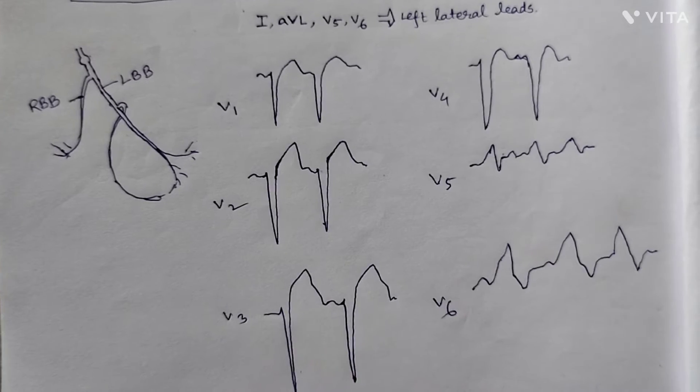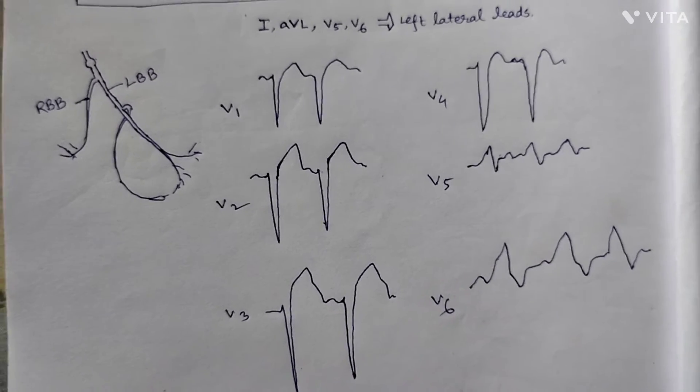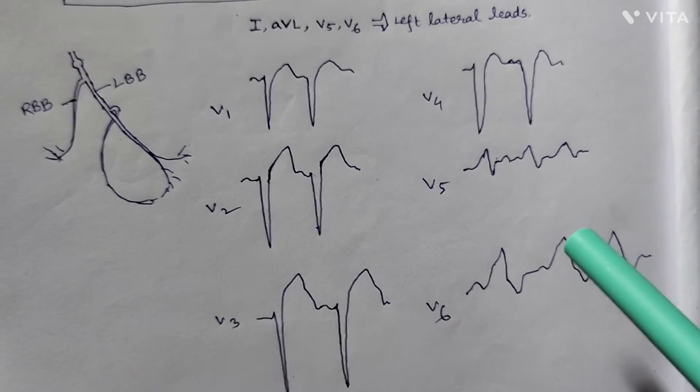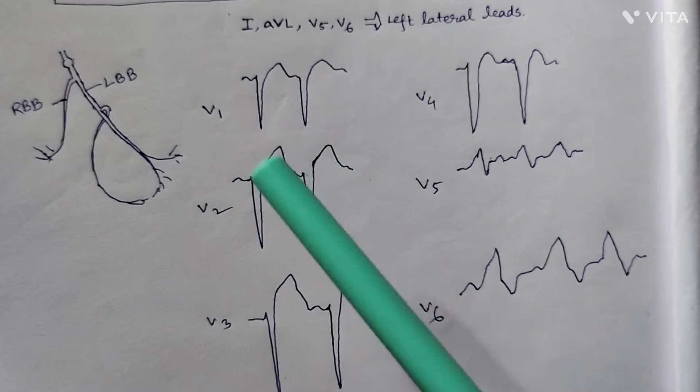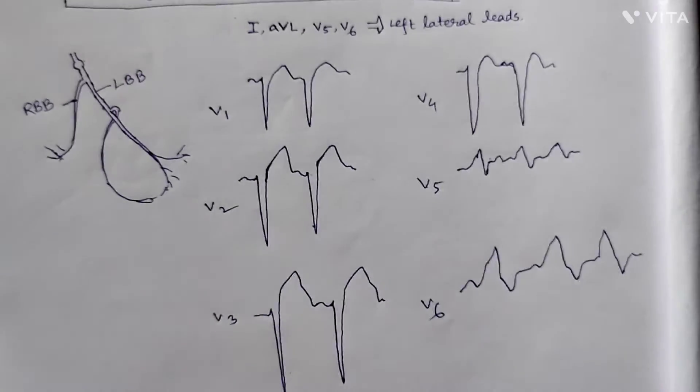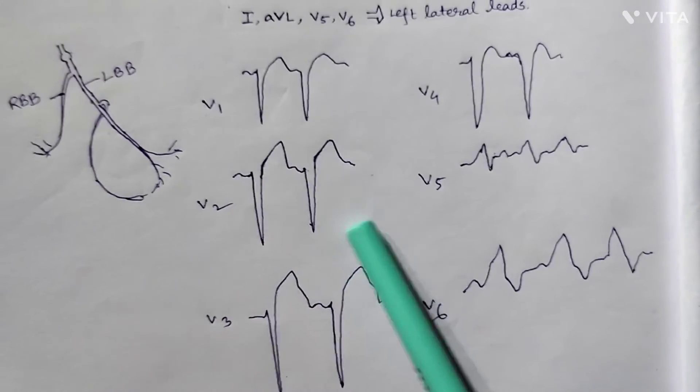One more important thing before I finish this video: in LBBB, the precordial leads V1, V2, V3 have deep S-waves, and the ST segment is also elevated.